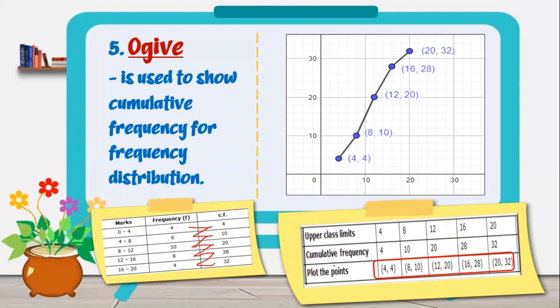Next, get the upper limits or class limits, and then get also the cumulative frequency. Plot these points in a Cartesian plane. So we have here our Cartesian plane. This is the y-axis and the x-axis. This is the same as with the other graphs that we use x-axis and y-axis.